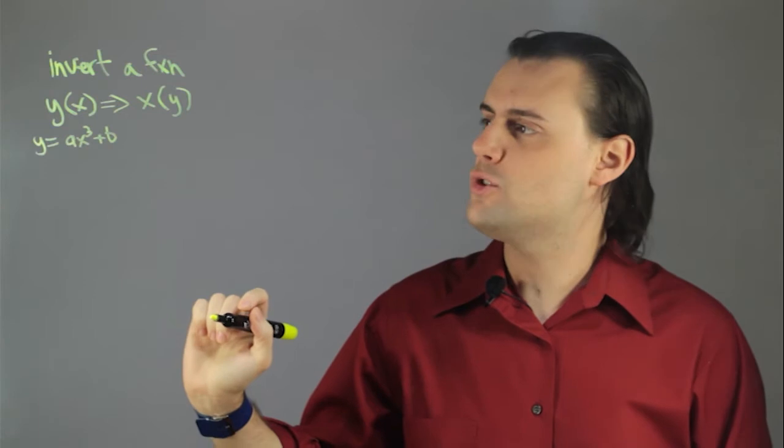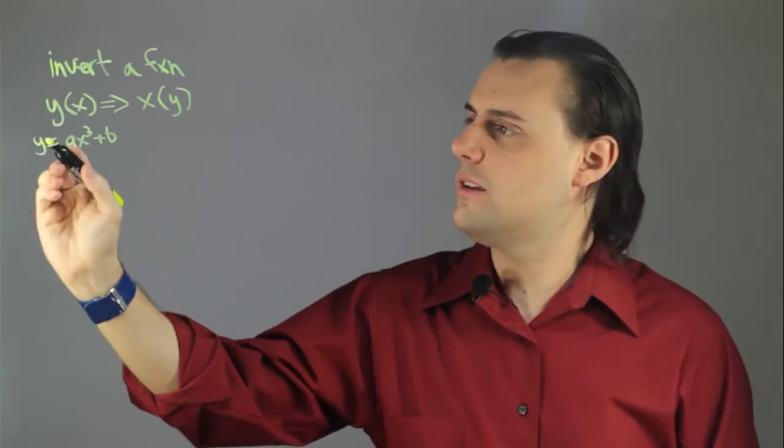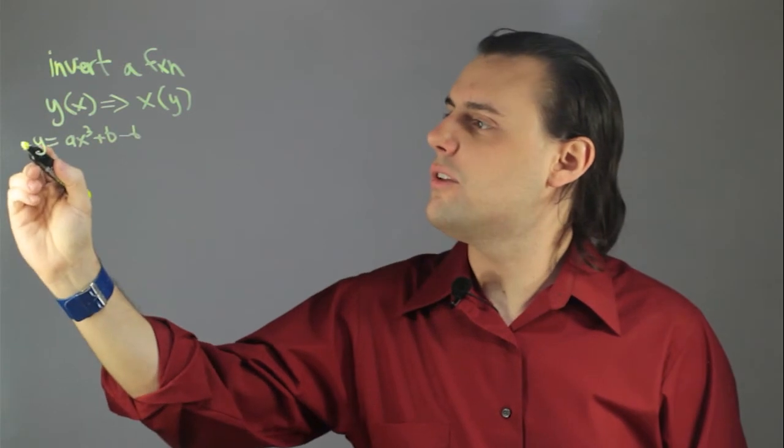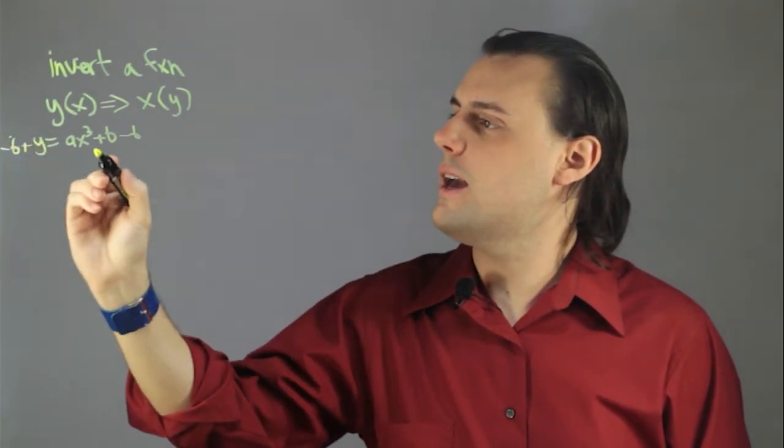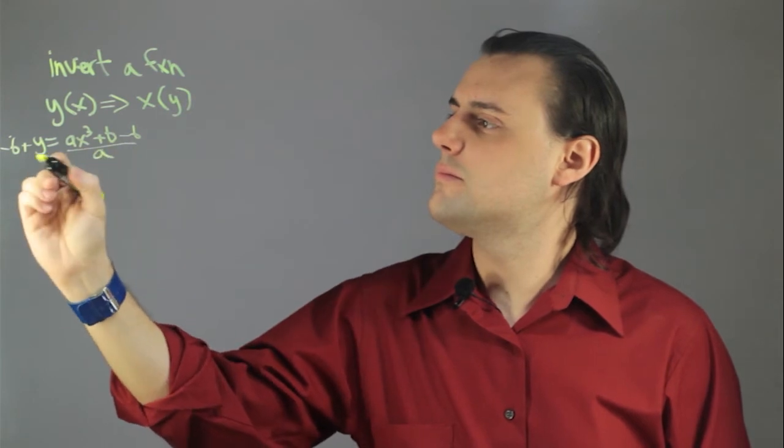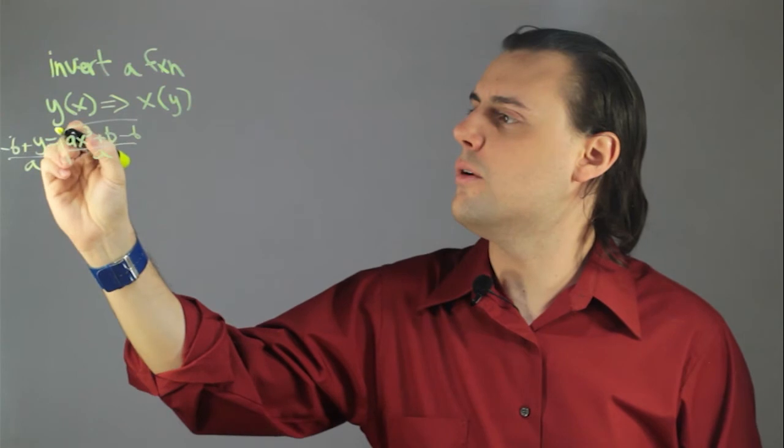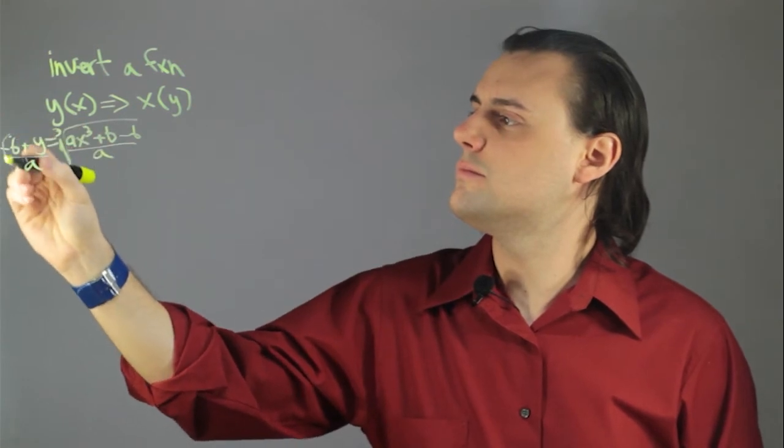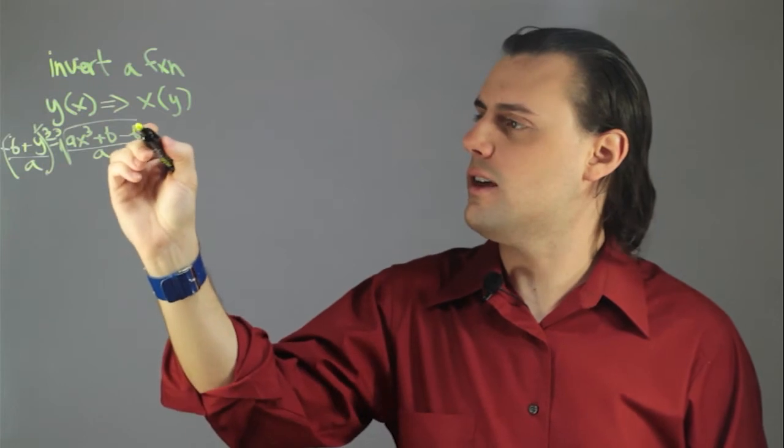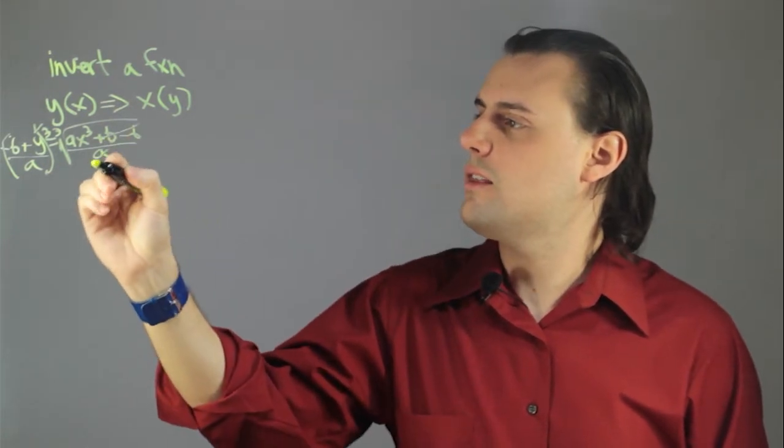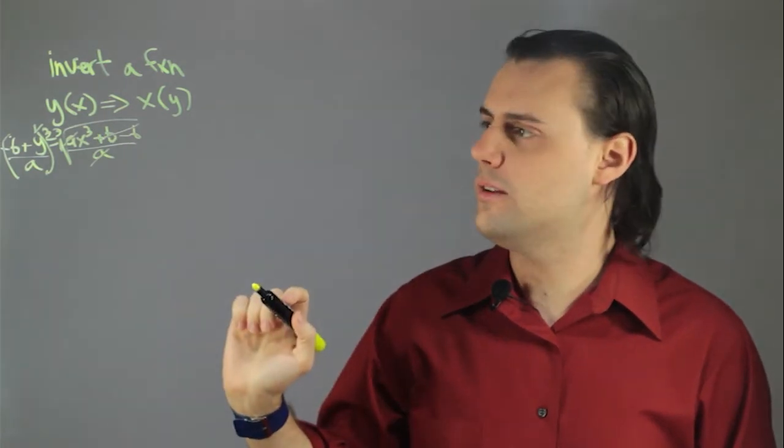So, with a little bit of algebra, we bring b over to the other side, divide both sides by a, and then finally take the cube root of both sides, and we see here that the b's cancel out, the a's cancel out, and then the cube root cancels out with the cube and the x.